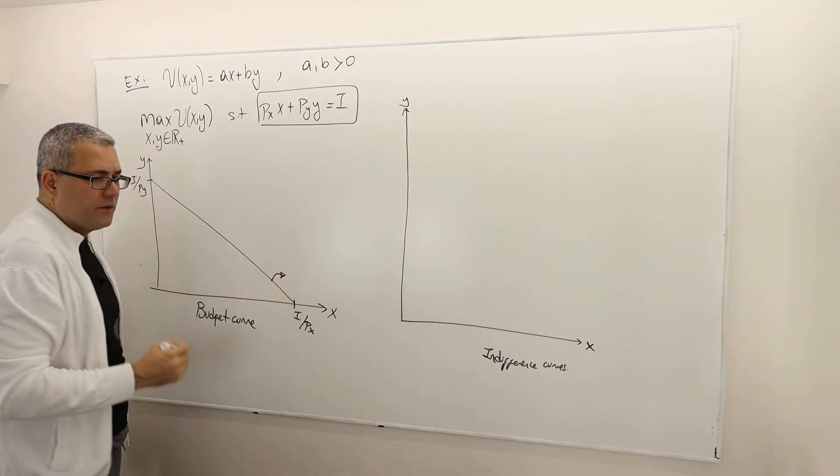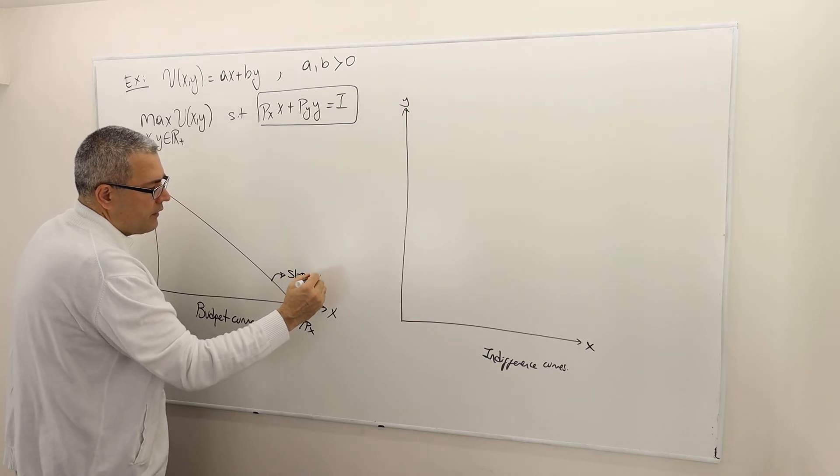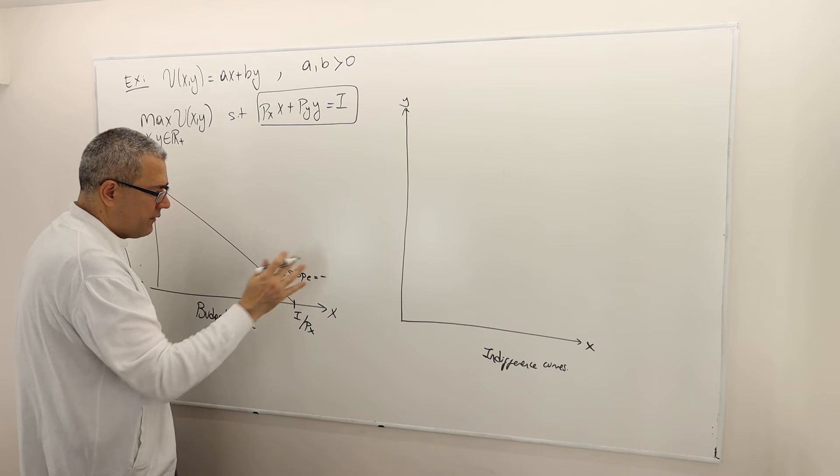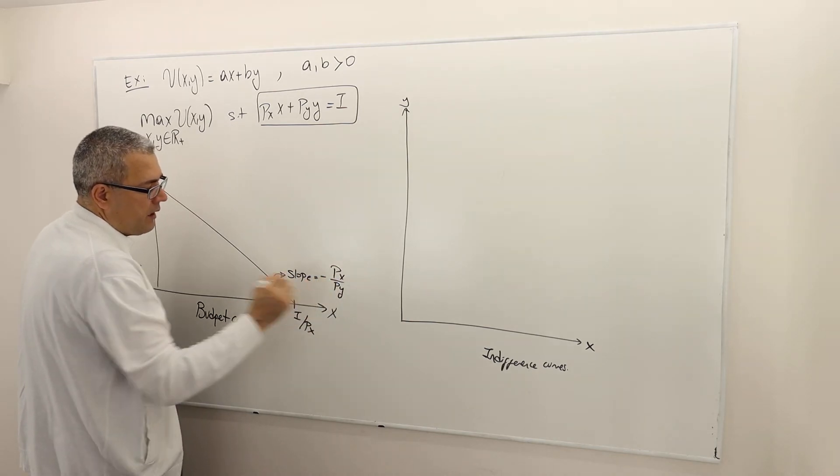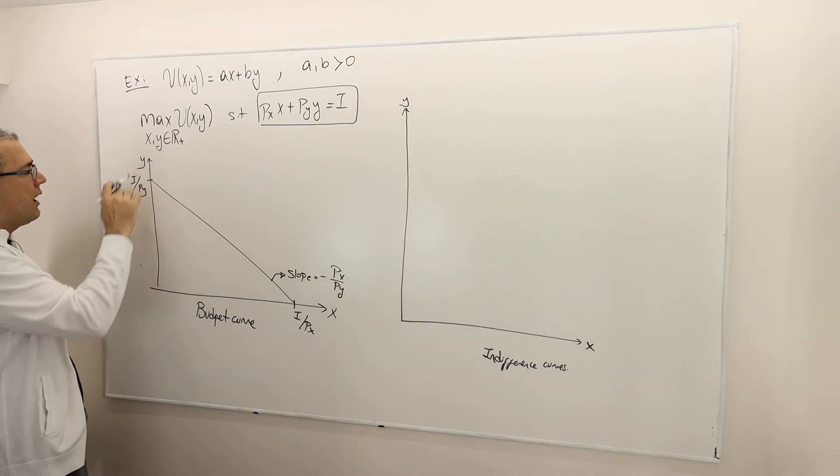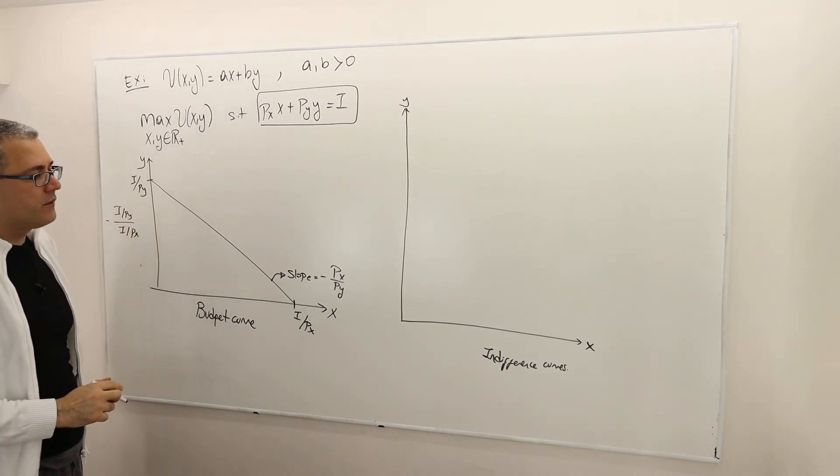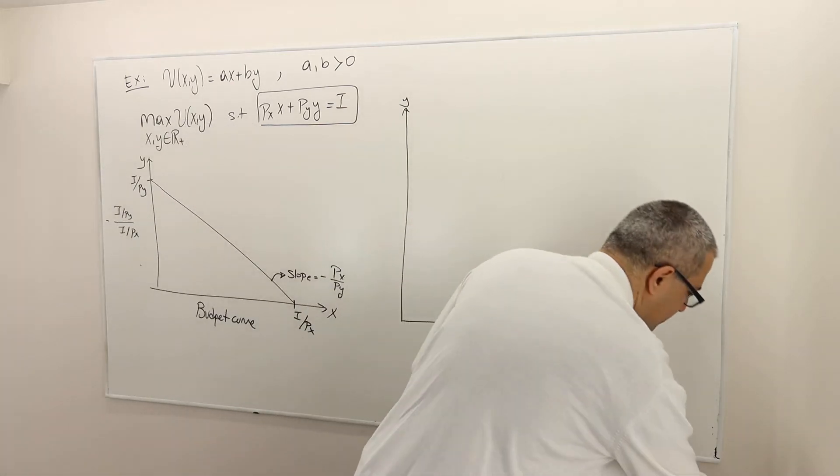One important thing to note is the slope of this curve is equal to minus PX divided by PY. And the reason is because the slope is equal to I over PY divided by I over PX, and so therefore it's minus PX over PY.